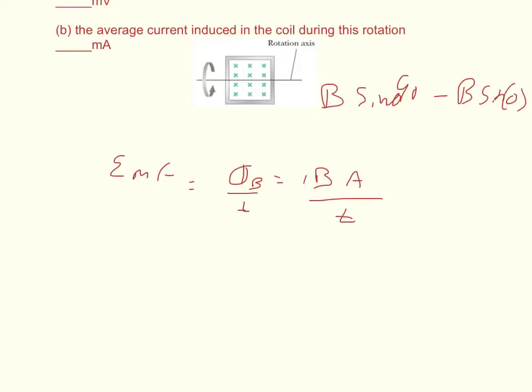And so that's the change of magnetic field which gives us the change in the flux. And the area is equal to, since it's a square, the length of one side squared.